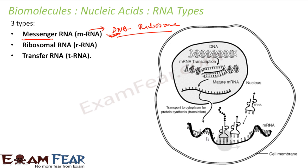Messenger RNA gives all this information to the ribosome and specifies specific amino acid sequences. A specific RNA sequence will correspond to a specific amino acid sequence. The genetic information is encoded in the sequence of nucleotides, arranged in codons — each codon being a three-base sequence representing a specific amino acid.